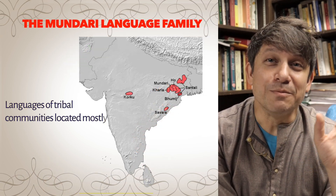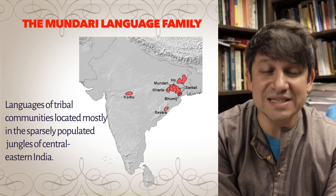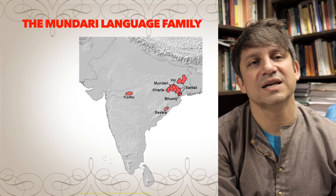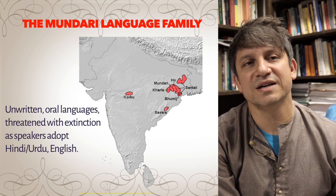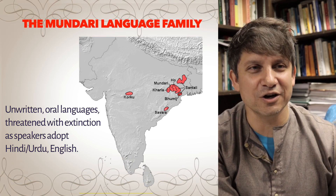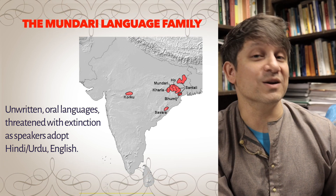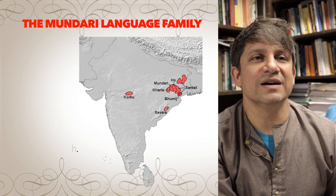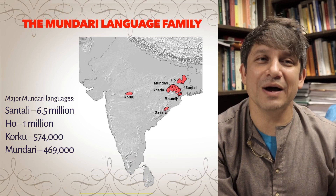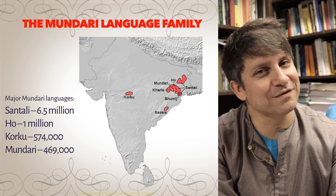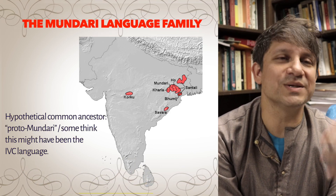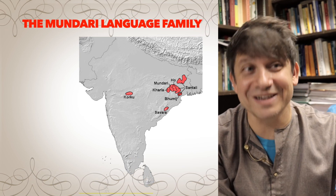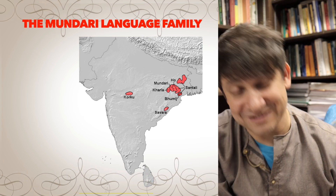The third family, Mundari (or Austro-Asiatic), is a set of languages spoken by tribal and rural communities in the jungles of central and eastern India. They're spoken by relatively small populations, are all unwritten, and have been passed down orally for thousands of years. Due to modernization and standardized national education, many Mundari languages are threatened with extinction as younger speakers choose English or Hindi — similar to indigenous languages in Canada. Some have already gone extinct. There's also a fascinating alternate theory that Proto-Mundari, rather than Proto-Dravidian, was the original language of the Indus Valley.